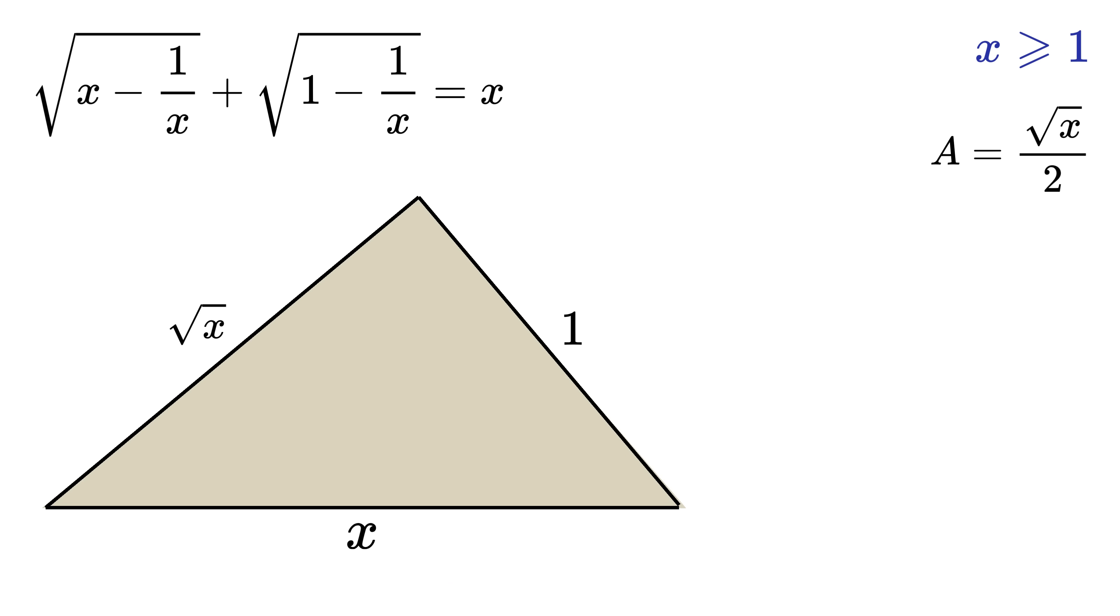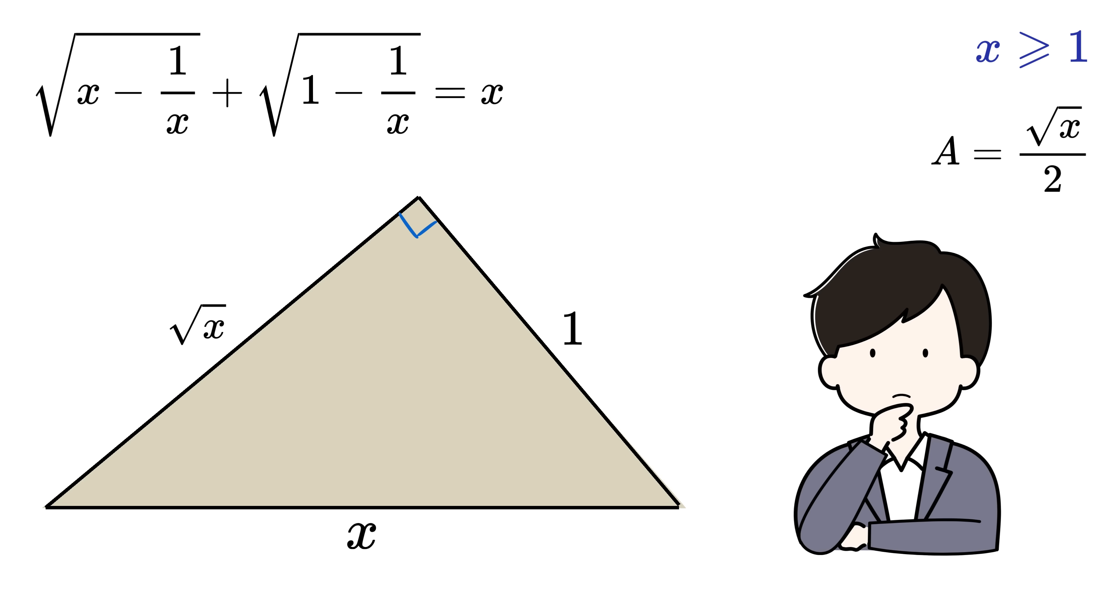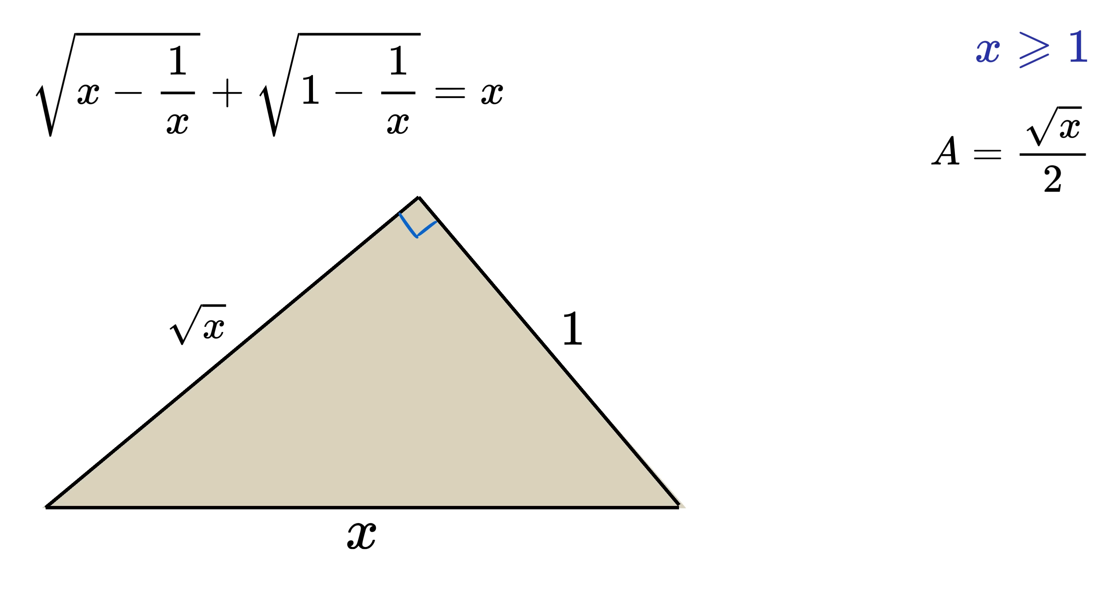Now, if I assume this big triangle is a right triangle, then is my assumption correct? Let us find it out. If it is really a right triangle, then the area of this triangle can also be found using the product of its both the legs that are perpendicular over 2. The product of both its legs will be 1 times root x, and over 2 gives root x by 2. Oh, my God! This means my assumption was correct, and it is indeed a right-angled triangle.